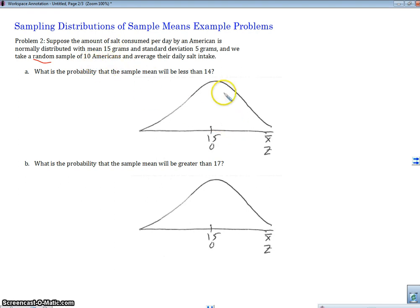And then finally, the central limit theorem. Well, we don't really actually need the central limit theorem in this case because it says that the amount of salt that is consumed per day by Americans is normally distributed. So since we already know that the population is normally distributed, then the sampling distribution is also going to be normally distributed. Alright, so let's take a look here.